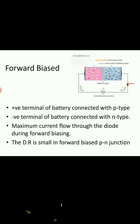This is a simple construction diagram for a forward biased diode. When we are connecting the positive terminal of an external battery to the P-type semiconductor and the negative terminal of the battery to the N-type semiconductor, at that time, we can say that the diode has a forward bias. Maximum current will flow through the diode during forward biasing.